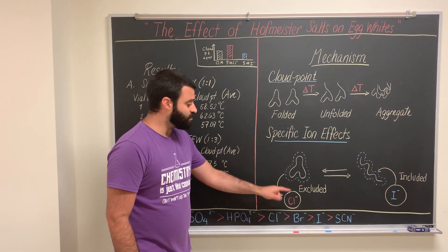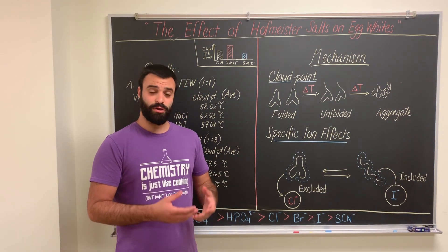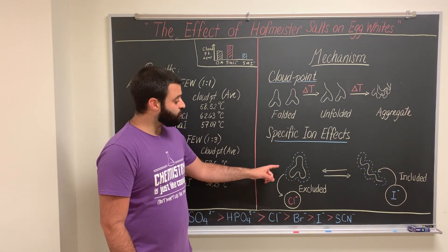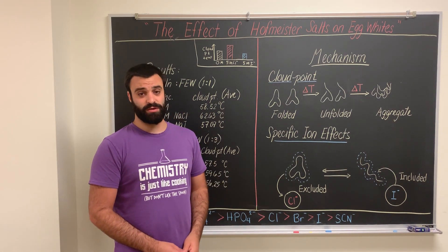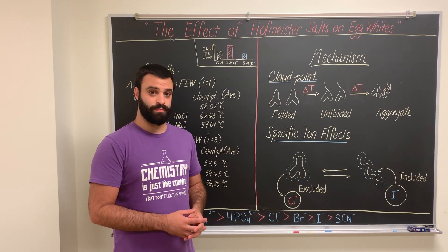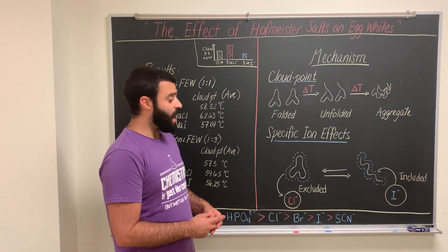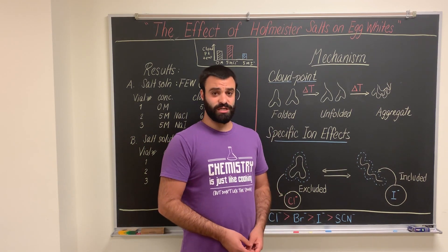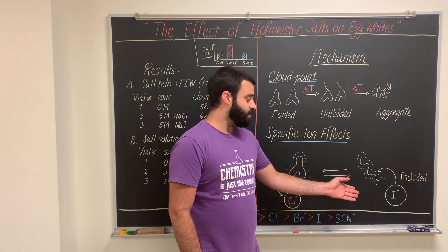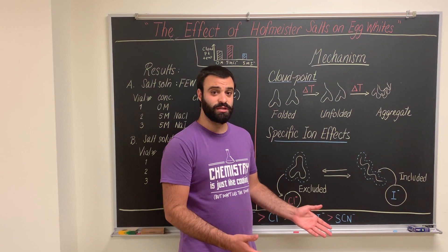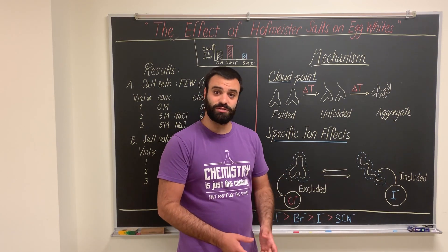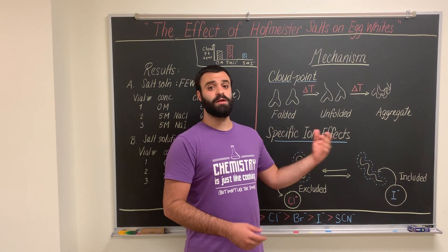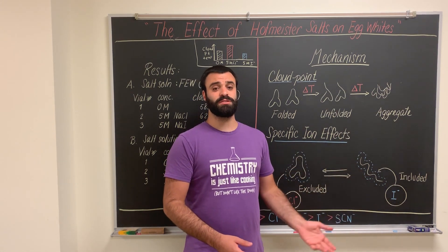Specifically, well-hydrated ions like chloride that are small or of high charge density are excluded from the surface of the protein, which stabilizes the folded state. However, ions that are poorly hydrated and of low charge density, like iodide, can shed their hydration shells and directly bind to the hydrophobic surface of the protein, and this stabilizes unfolded states and induces denaturation.